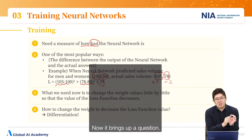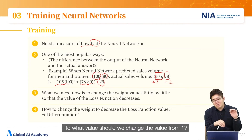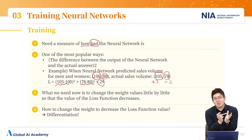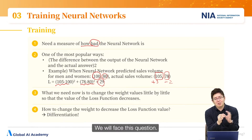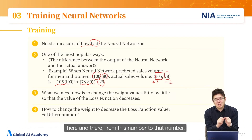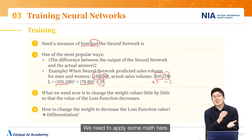Now a question arises: if we started with weights of 1, to what value should we change them? Too much adjustment can lead to bigger differences. Should we change 1 to 1.1 or 2.09? We cannot just randomly change the numbers — it will take forever. We need to apply some math here.